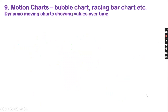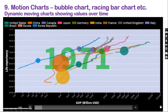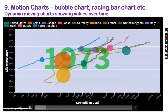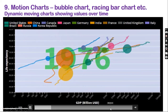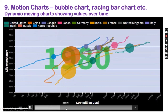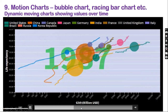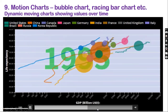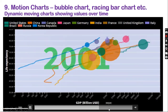Number 9: Motion charts. We can also show data in terms of moving charts such as bubble charts, the racing bar chart, or other forms of dynamic charts. For example, in this bubble chart, I have tried to show the relationship between the GDP and the life expectancy of different countries.